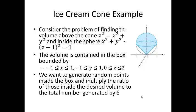The volume is contained in the box bounded by x from -1 to 1, y from -1 to 1, and z from 0 to 2. We want to generate random points inside that box, figure out which ones are inside the area where we desire the volume, then take the ratio of those inside the desired volume to the total number generated and multiply by 8.